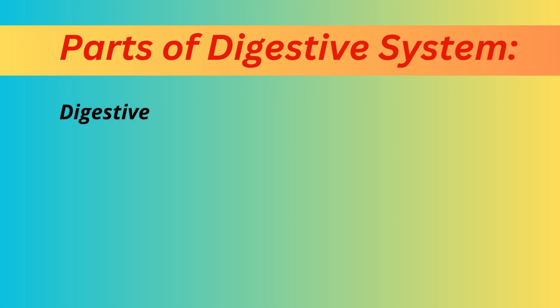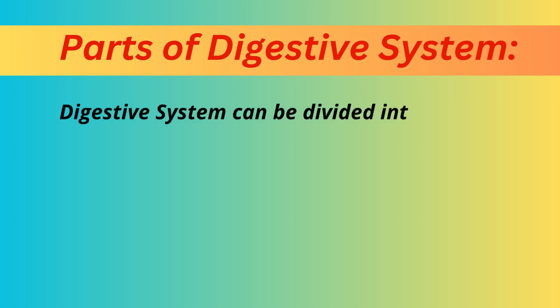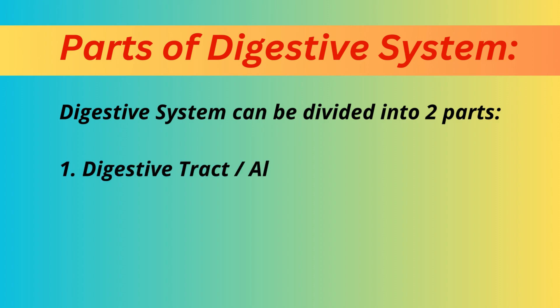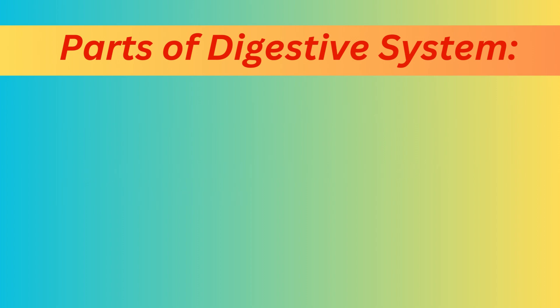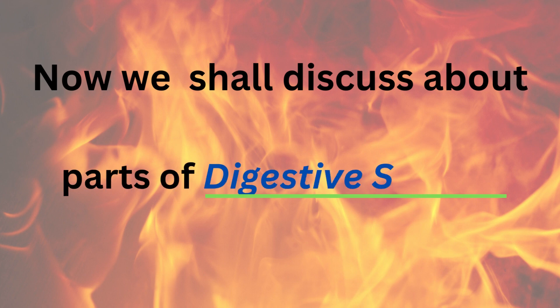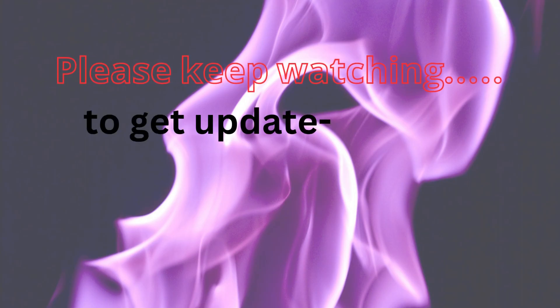Parts of Digestive System. The digestive system can be divided into two parts: 1. Digestive Tract or Alimentary Tract, and 2. Digestive Glands.